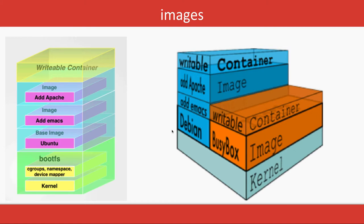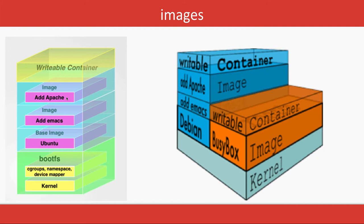If you talk about the file system, at the bottom is the boot filesystem — bootfs — which contains cgroups, namespaces, and device mapper. That's the minimal Linux kernel. On top of that we have a base Ubuntu image, then we install Emacs, then Apache — each creating a separate layer with its own image ID.